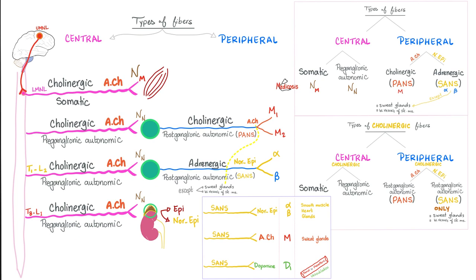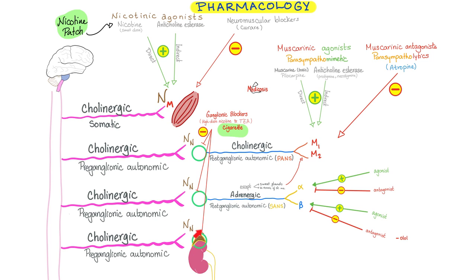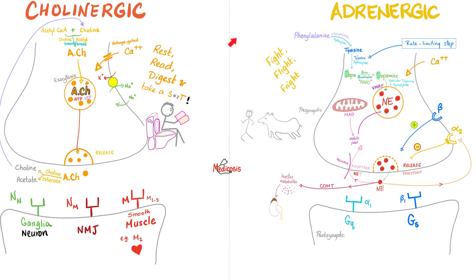Let's name the neurotransmitter at each synapse: acetylcholine here, acetylcholine here, acetylcholine here, acetylcholine here. For the sympathetic postganglionic, this is norepinephrine. All of these lovely synapses have receptors, and you can stimulate or inhibit these receptors using medications, as we have discussed before. Let's do this for the cholinergic system and for the adrenergic system.